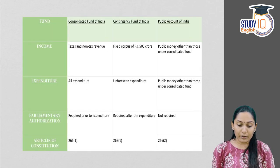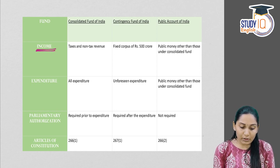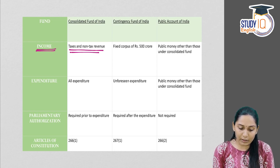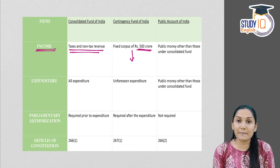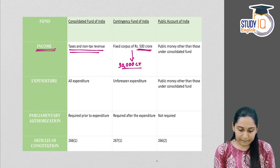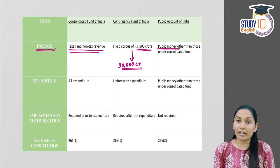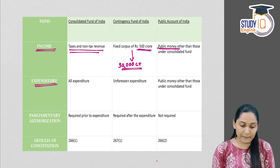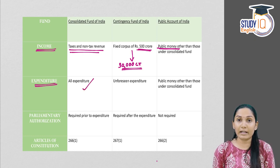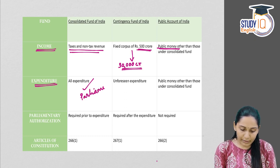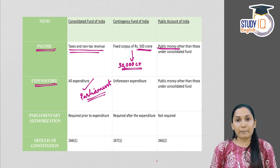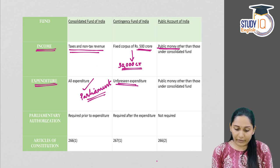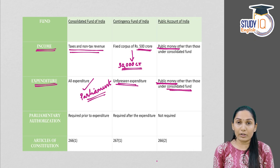To sum up, comparing all three funds: Regarding income, all revenue — both tax and non-tax — goes to the Consolidated Fund. The Contingency Fund has a fixed corpus of 500 crore, proposed to be increased to 30,000 crore in the 2021-22 budget. Public Accounts receives all public money not covered under the Consolidated Fund. Regarding expenditure, all government expenditures are met from the Consolidated Fund with parliamentary approval; the Contingency Fund covers unforeseen expenditure; and Public Accounts covers public money outside the Consolidated Fund.